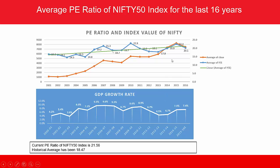The historic average PE ratio has been 18.47 and the current PE ratio is 21.56. The question generally asked is: are the markets expensive or cheap? The general approach is to take the average PE over the last 10 to 15 years and check if the current PE is higher or lower than that historical average.